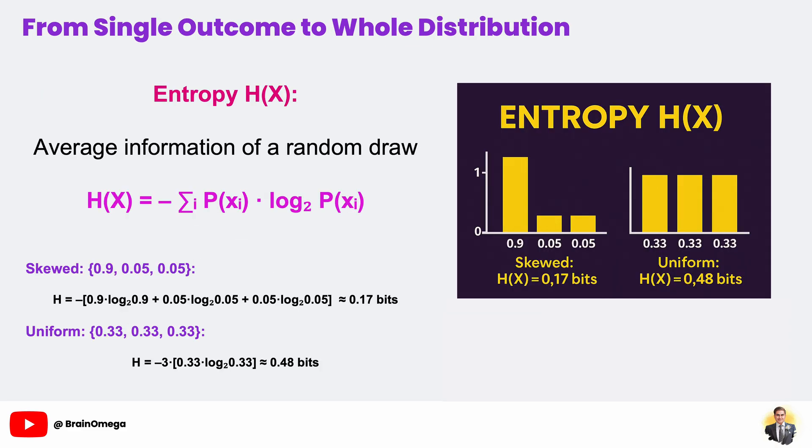Up to now, we've seen how much surprise each outcome carries in isolation. Entropy generalizes that to the whole distribution. It asks: on average, how many bits of surprise will you encounter if you draw a random sample? Concretely, we compute H(X), which does two things at once. First, for each possible outcome x_i, it multiplies its probability P(x_i) by its information content log base 2 of P(x_i), giving more weight to rare but highly surprising events and less weight to common, low-surprise events. Second, summing over all outcomes tells us the expected number of bits we'd need to describe any one draw.